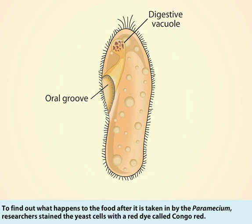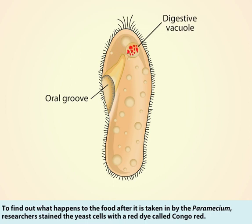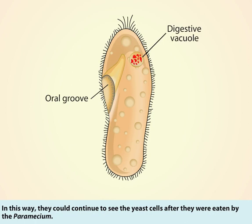To find out what happens to the food after it is taken in by the paramecium, researchers stained the yeast cells with a red dye called Congo Red. In this way, they could continue to see the yeast cells after they were eaten by the paramecium.